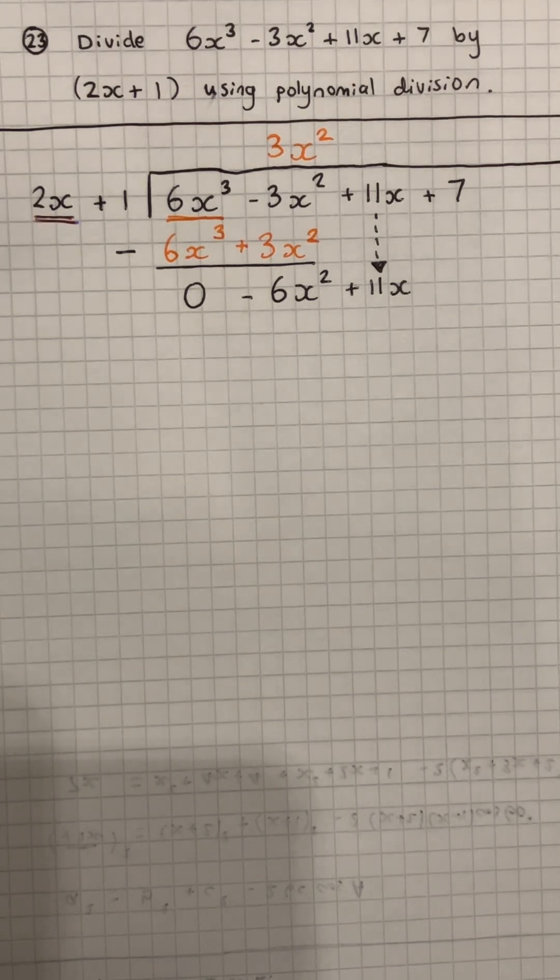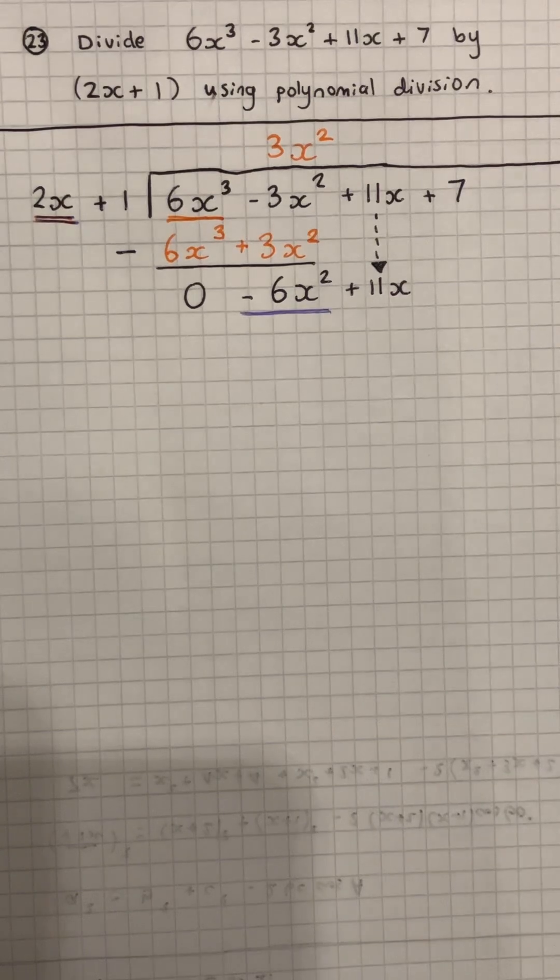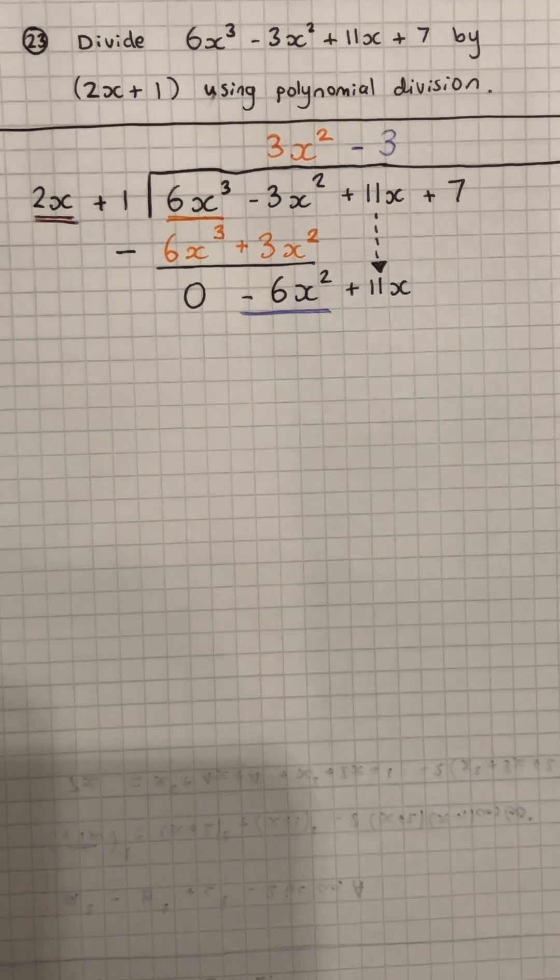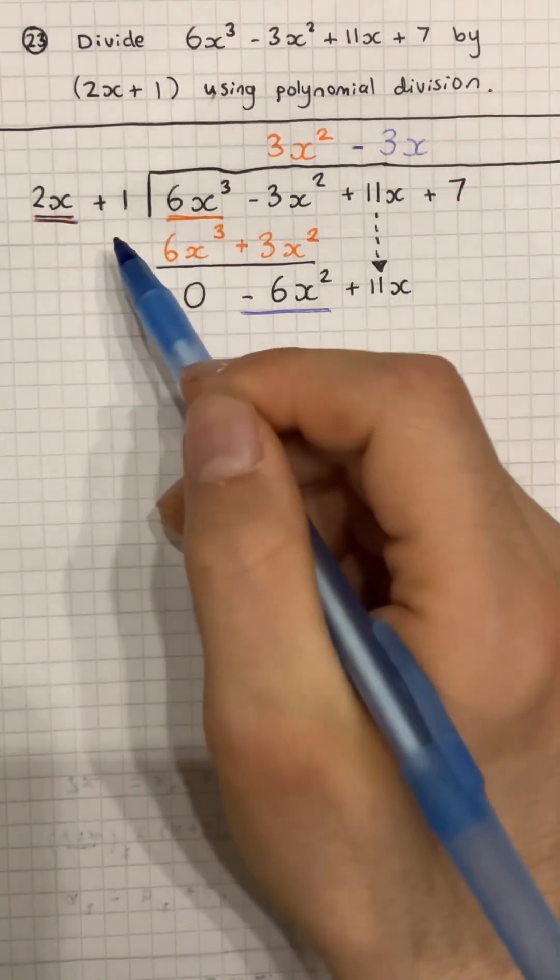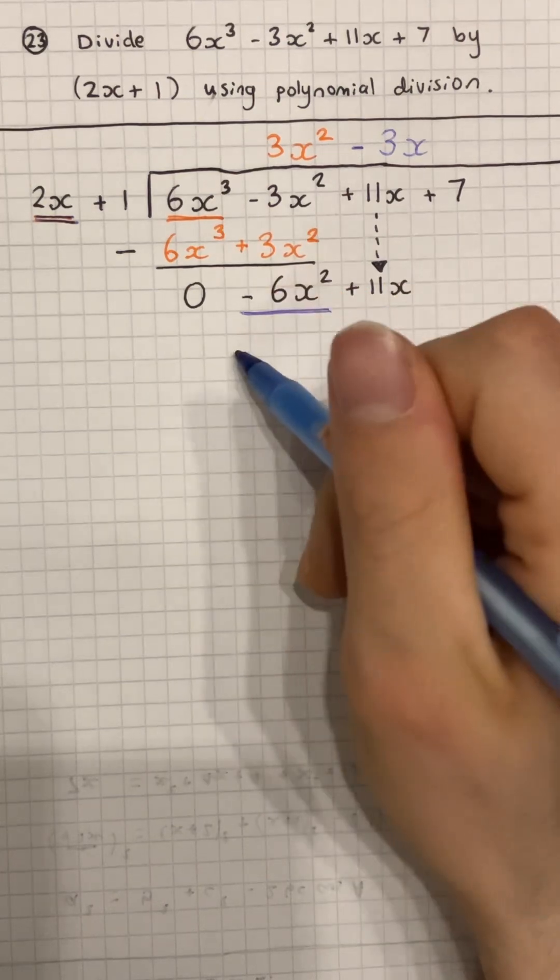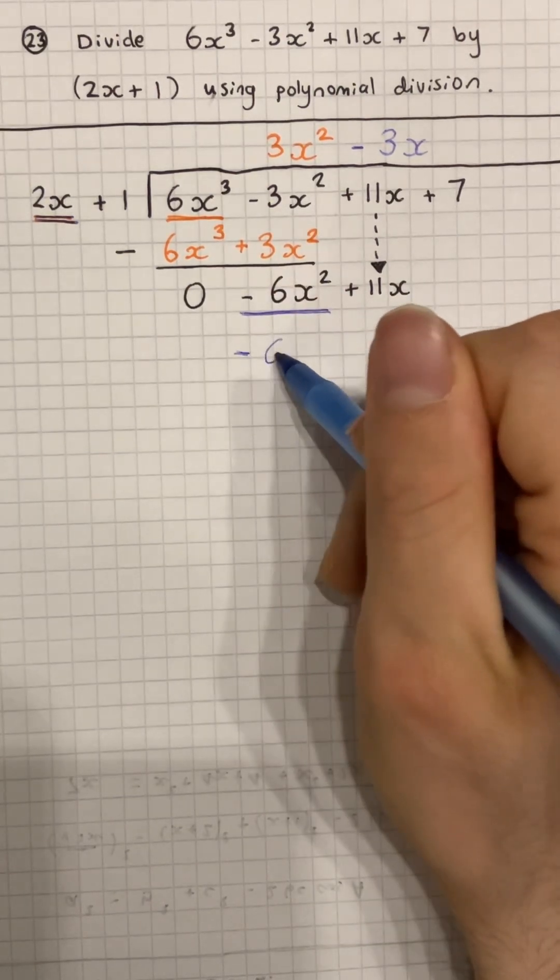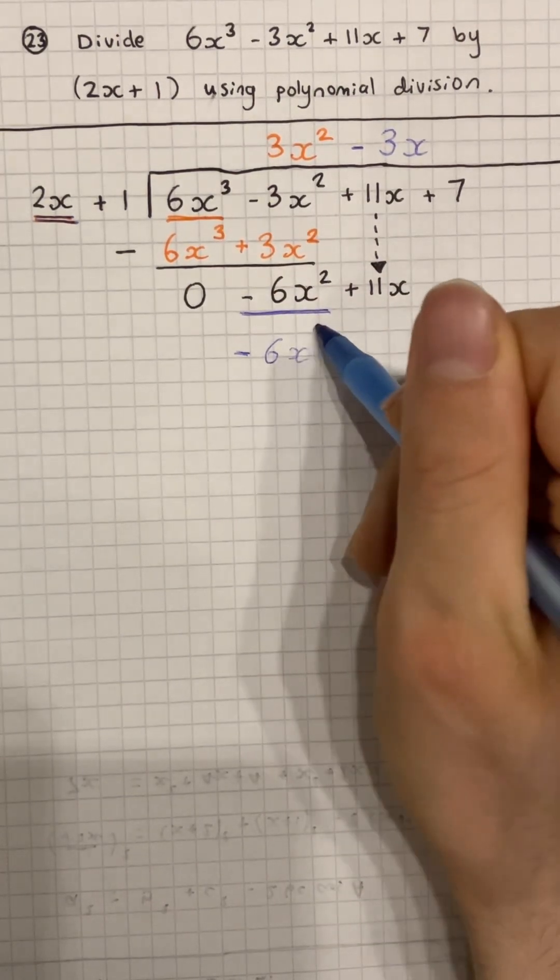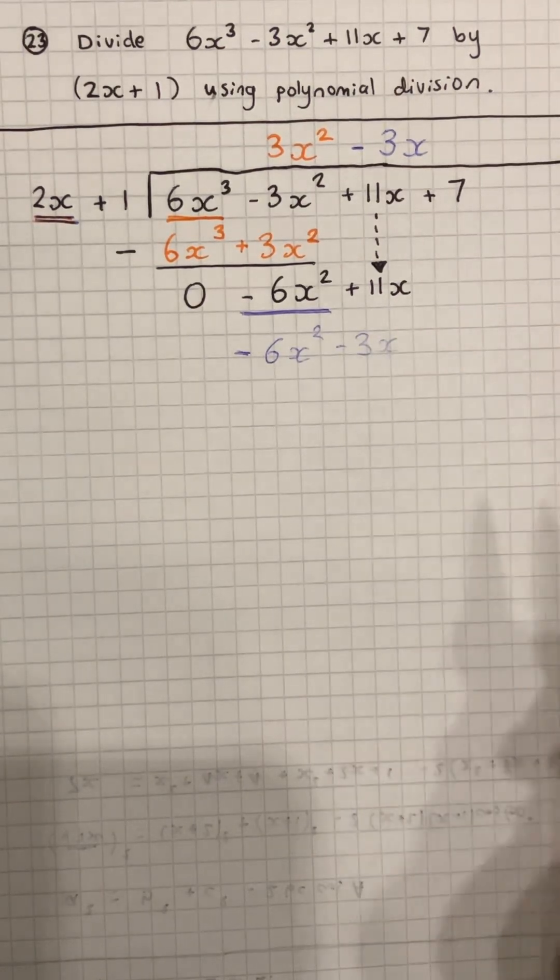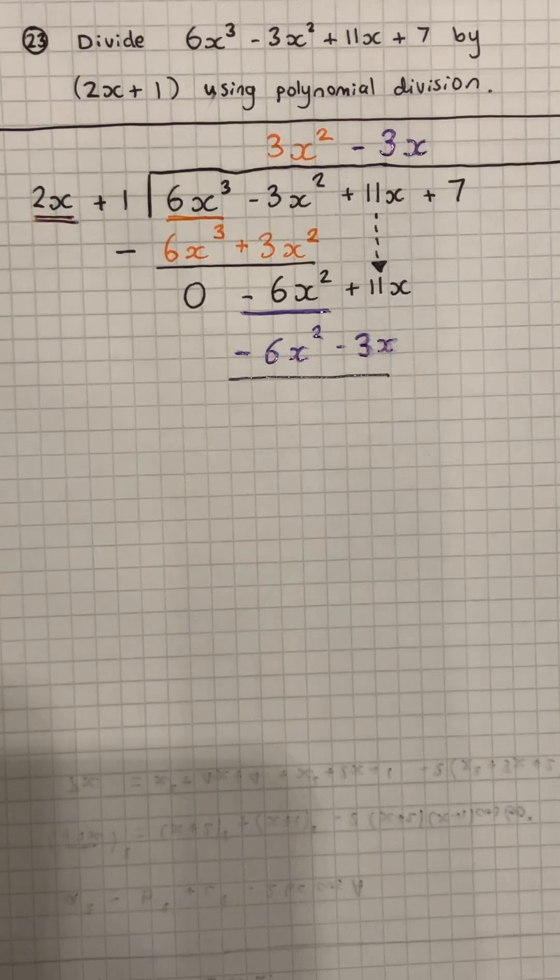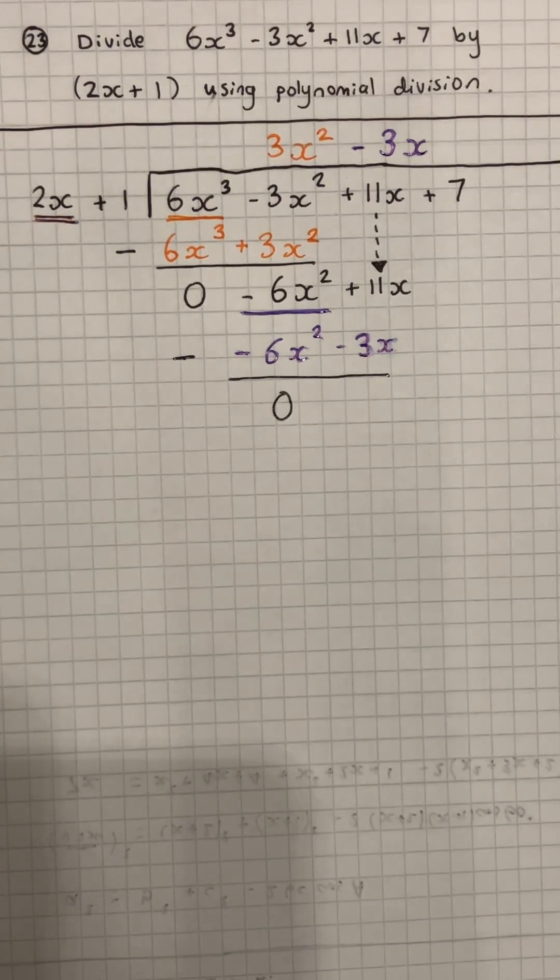So ask, what do you times by 2x to get to minus 6x squared? The answer, you put at the top. You then take the answer and multiply it by 2x plus 1 on the outside. So minus 3x times 2x and minus 3x times 1. We're then going to subtract these two. If you've done it right, the first term should be a 0. And just be careful of the two negatives here.